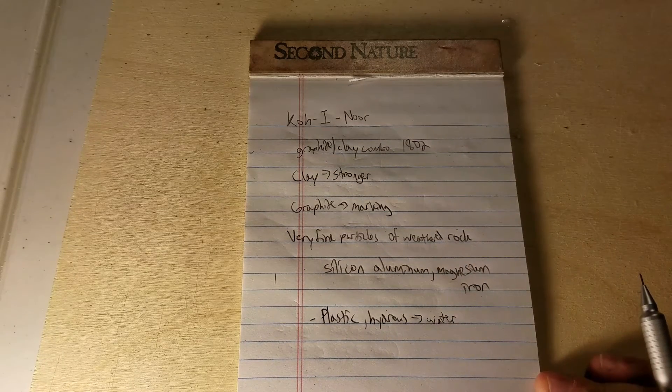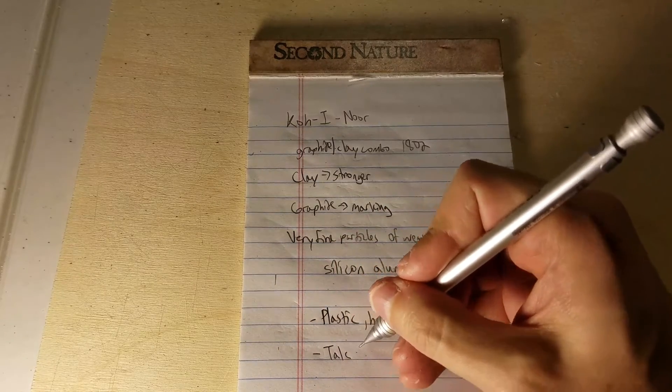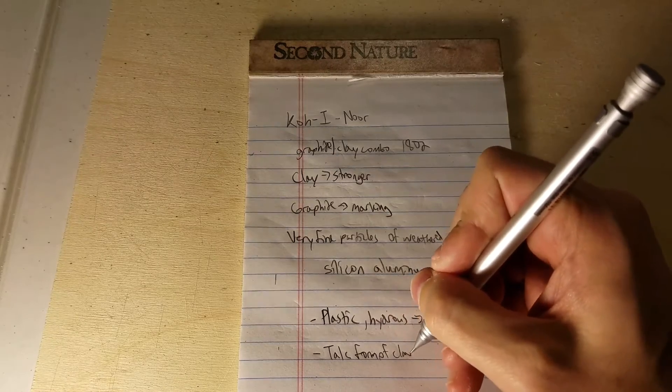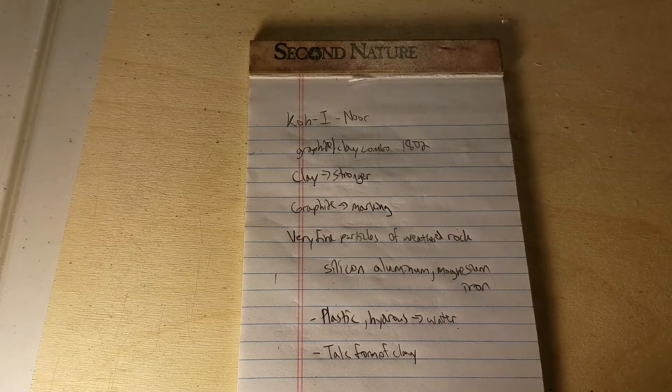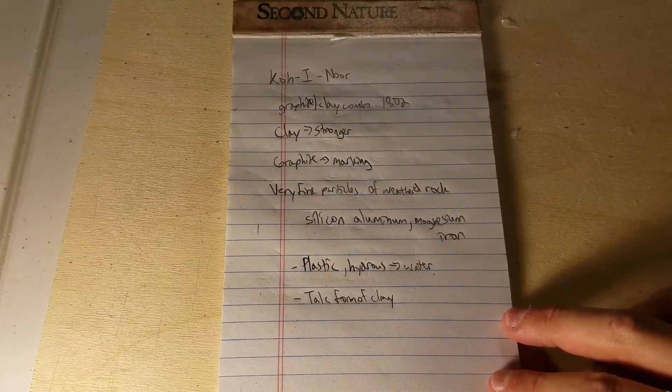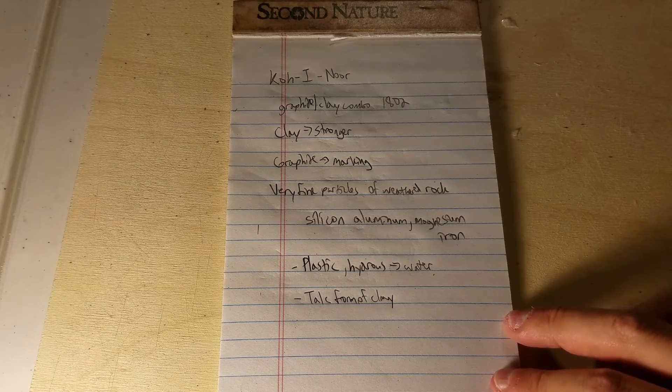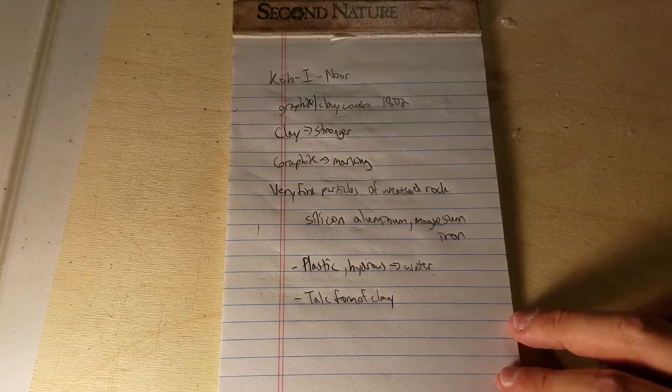Now it's important to note here that talc is a form of clay. And when people think of really soft minerals like talc that are like a one on the Mohs hardness scale, we're talking about a mineral that is essentially a clay mineral. And so perhaps it shouldn't surprise us that graphite also has a very low number on the Mohs hardness scale.